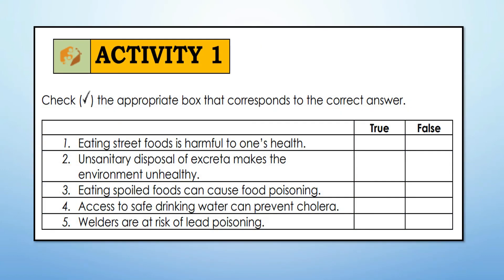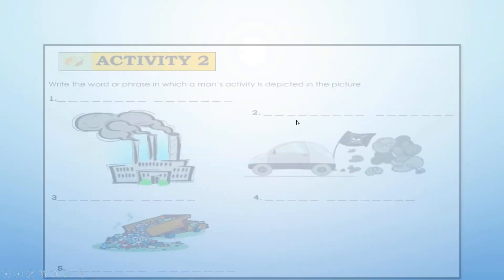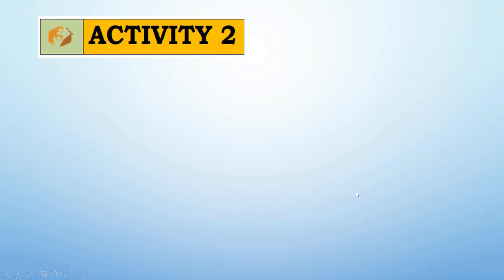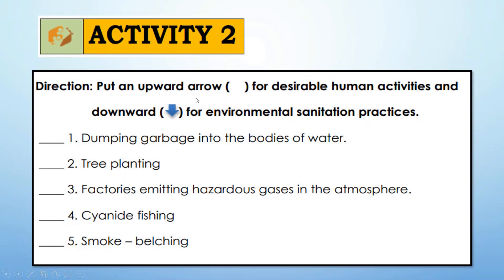These are the activities you are going to answer in your self-learning module. For Activity 1: check the appropriate box that corresponds to the correct answer — write True or False for each sentence. For Activity 2: write the word or phrase that describes the human activity depicted in the picture, and put an upward arrow for desirable human activities and a downward arrow for undesirable environmental sanitation practices.